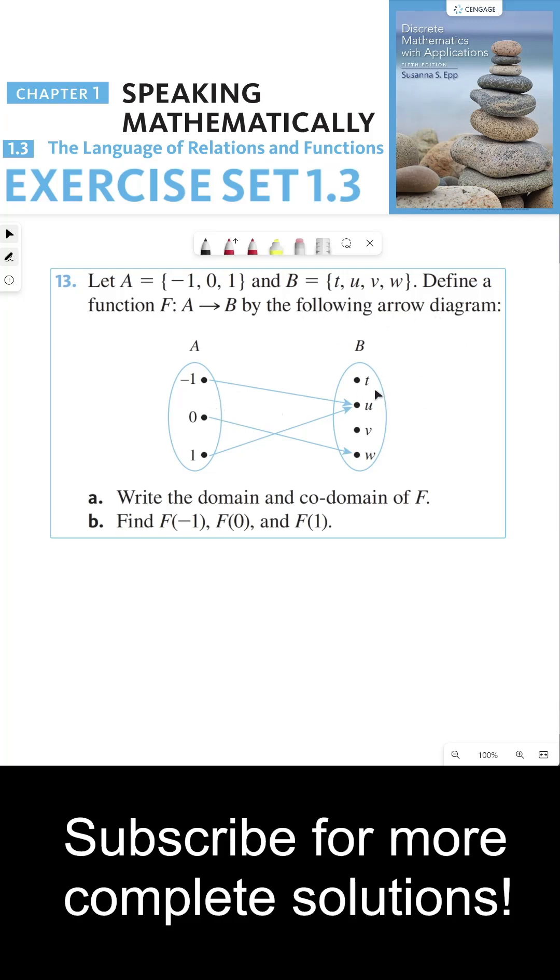You notice that not all of the elements in set B here are outputs of this function F. This says, write the domain and codomain of F.